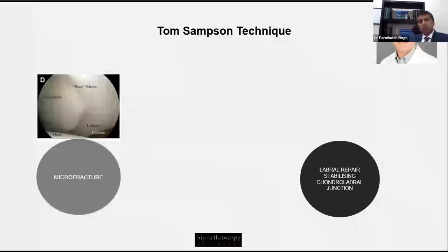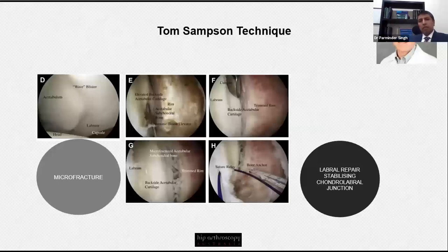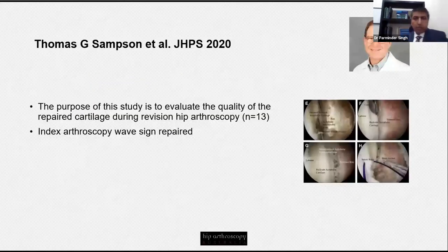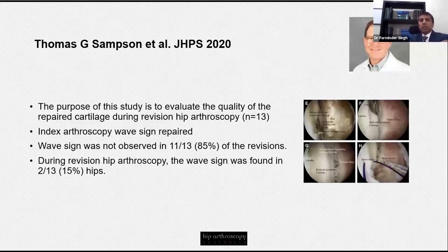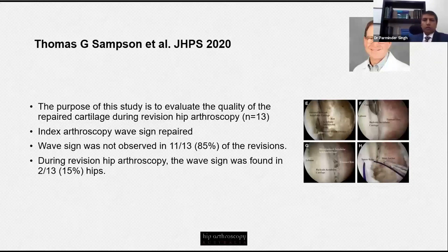Tom Sampson's technique uses a microfracture approach: he takes down the chondrolabral junction, corrects the pincer lesion, and then repairs the chondrolabral junction with a suture. His study, recently published in the Journal of Hip Preservation, is quite unique given the paucity of such reports. He reported on his revision cases and identified that 13 had a wave sign repaired at the index operation using his technique; 11 of those 13 patients still had an intact wave sign — demonstrating 85% efficacy. Only two cases continued to have wave signs, which he attributed to residual impingement in the hip.